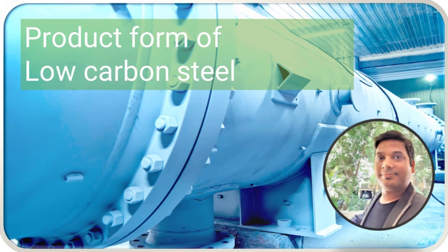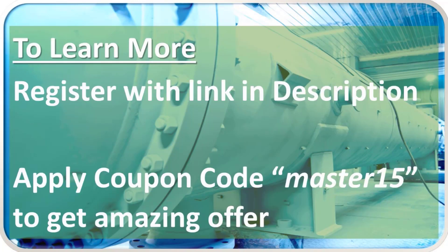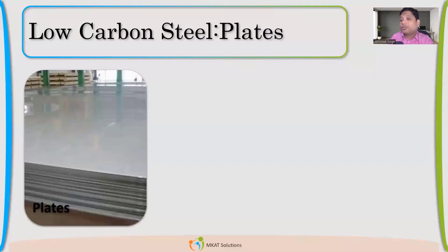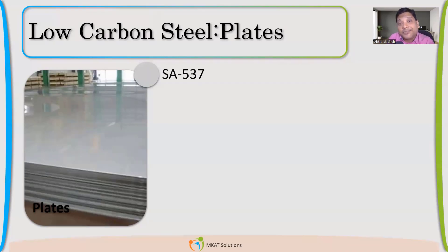Hello everyone, in this lecture we are going to see product forms of low carbon steel. Now let's talk about the different ASME grades which we use. We are very focused on static equipment design engineers, so if the process or your client has mentioned low carbon steel only, what material grade should we select? SA537 is a very high strength carbon steel material.